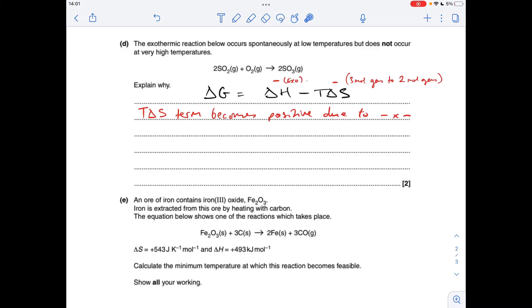Moving on to part D, we've got to explain why this process is spontaneous at low temperature but doesn't occur at high temperature. Well, it all boils down to the relative sizes of the ΔH and the TΔS term. And effectively, if ΔG is less than zero, then the process is spontaneous. If ΔG is greater than zero, it's not spontaneous.